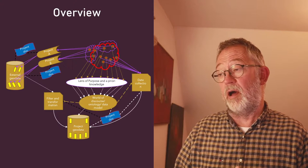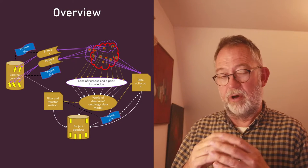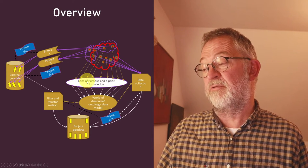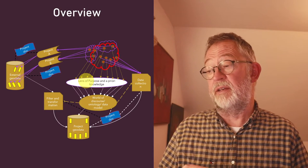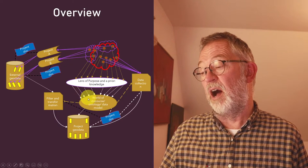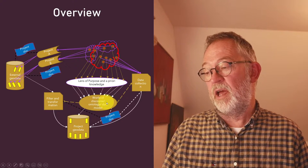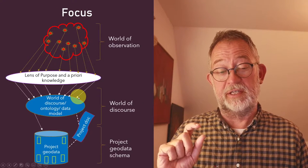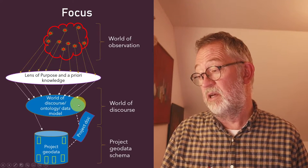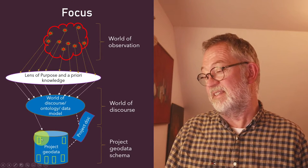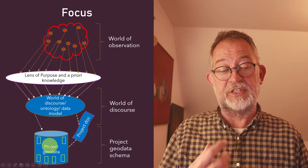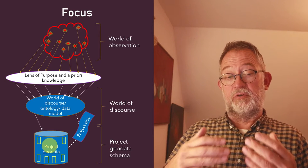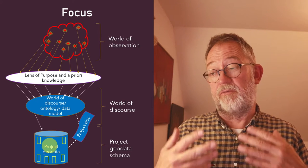In the video about how one structures a project, I have this diagram where we have our world of observation that we study through the lens of purpose and a priori knowledge, which then generates our world of discourse. Based on that, we can collect data ourselves or use existing data. This video will focus on a version where we have our world of observation, our lens, our world of discourse, but the yellow dots are hollow — indicating there's no data. It's just a schema, just saying which layers or feature classes and which attributes are in it. So there's no data, just a structure — that's what we call the schema.